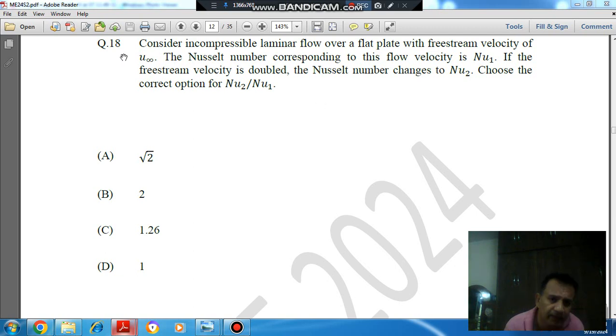Hello, welcome again. We are solving the reasoning paper question. The question is: consider incompressible laminar flow over a flat plate with free stream velocity of V∞. The Nusselt number corresponding to this flow velocity is NU1. If the free stream velocity is doubled, the Nusselt number changes to NU2.